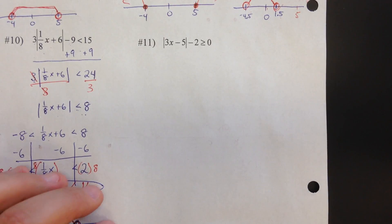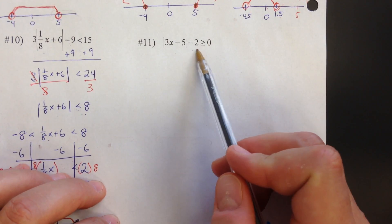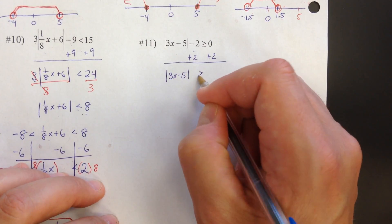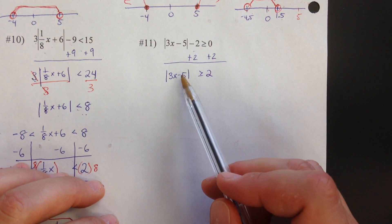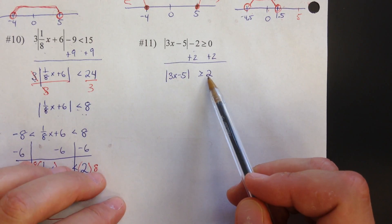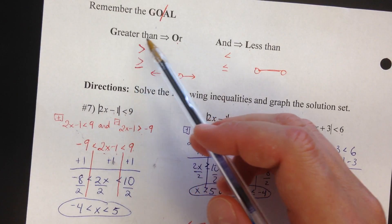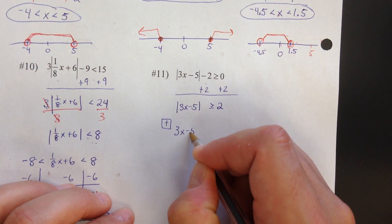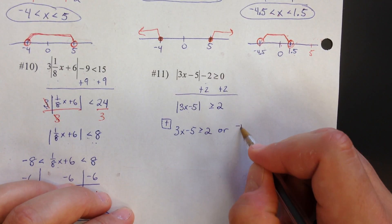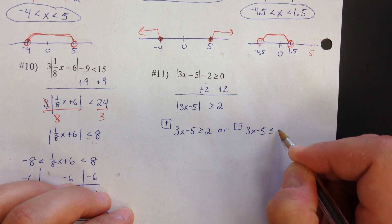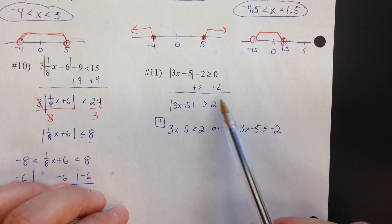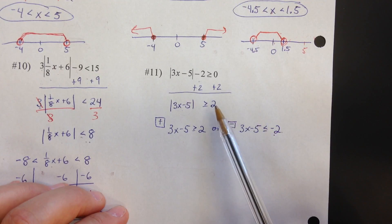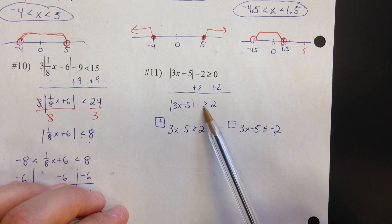Okay, we got the last one — number eleven. Before we start doing our cases, let's move this minus two to the other side. We want to get the absolute value by itself: absolute value of 3x minus five greater than or equal to two. Absolute value greater than or equal to — so remember the goal, greater than is an or problem. Positive case: 3x minus five greater than or equal to two. Or negative case: 3x minus five less than or equal to negative two. When you do the negative case, you don't change the side with the absolute value — you only change the sign on the other side, so that becomes negative two, and the inequality flips.